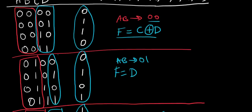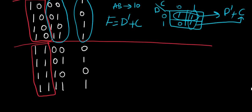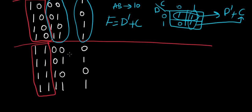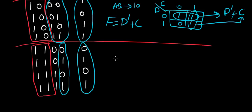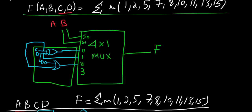Now we go to the final input. We notice that the output here is equal to D again, same as earlier. So F equals D, and we connect D directly to input 3, similarly.